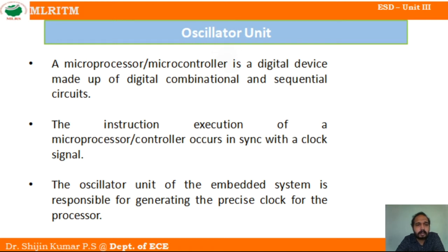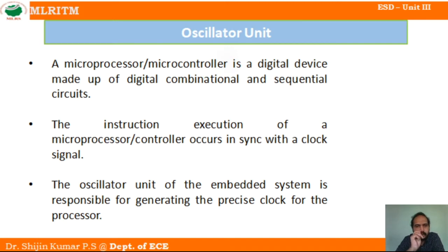The clock provides a square pulse, and this square pulse is used for all the activities of the microprocessor and microcontroller. It utilizes a number of clock pulses for performing operations. We also define the speed of a computer in terms of clock speed.